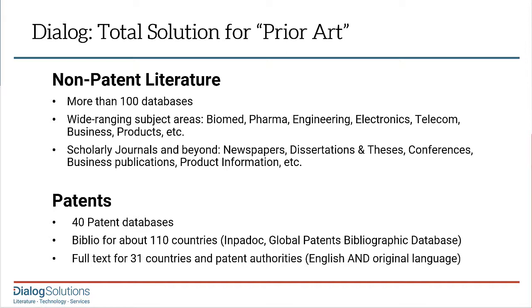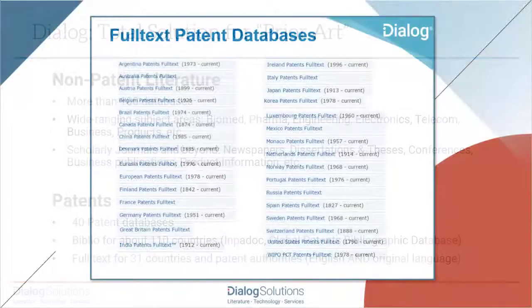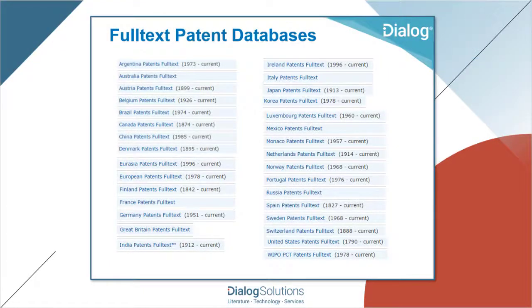The sections — like title, abstract, claims, or specifications — can be searched separately or in any combination, to give the searcher full control over the search. Patent examiners will understand that in a prior art search, you don't want to check only the so-called major patenting authorities. You want to search everywhere you can so that you don't miss anything. All of these full-text databases are very useful and even critical to a good prior art search, and Dialog's collection of these is second to none.